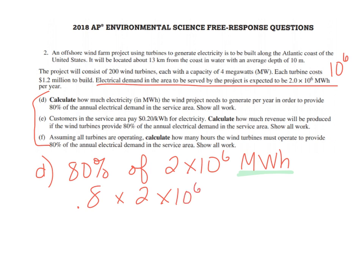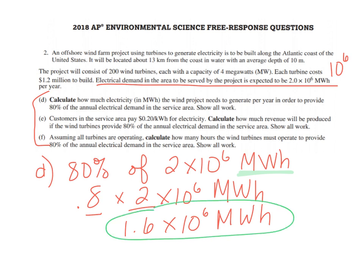We have here 0.8 times 2 times 10 to the 6. Starting in 2020 you can use your calculator, but the math up until 2019 was easy enough to do without your calculator. You can just multiply these together: 0.8 times 2 is equal to 1.6 times 10 to the 6 megawatt hours.